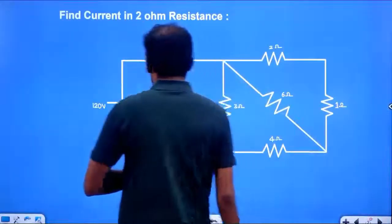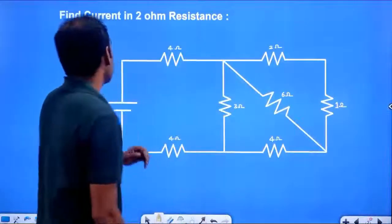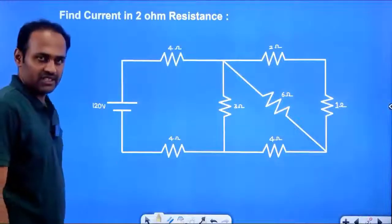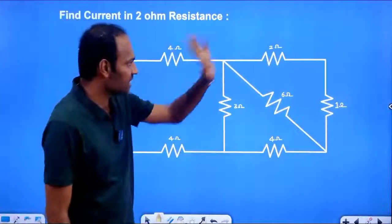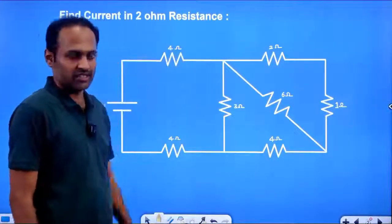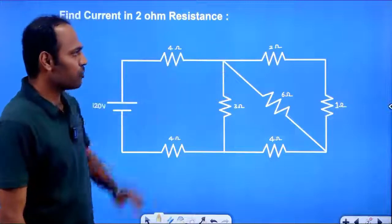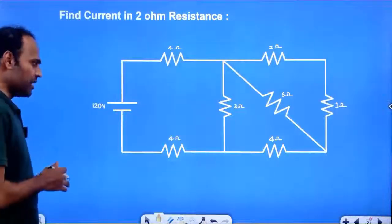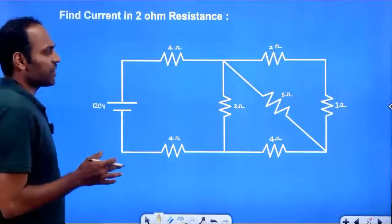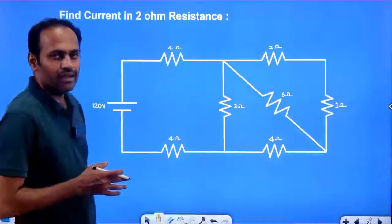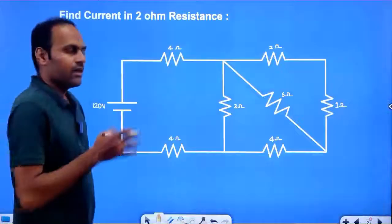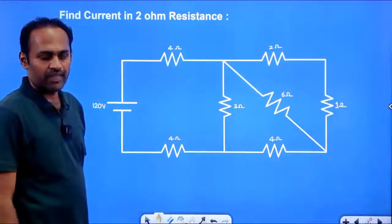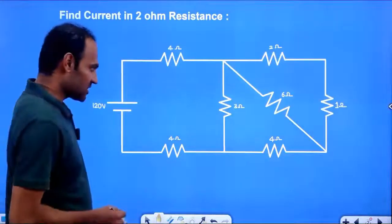Illustration 11: find the current in the 2 Ohm resistance. Here is the 2 Ohm resistance. First, we have to find the current and effective resistance. We have to find the effective resistance.